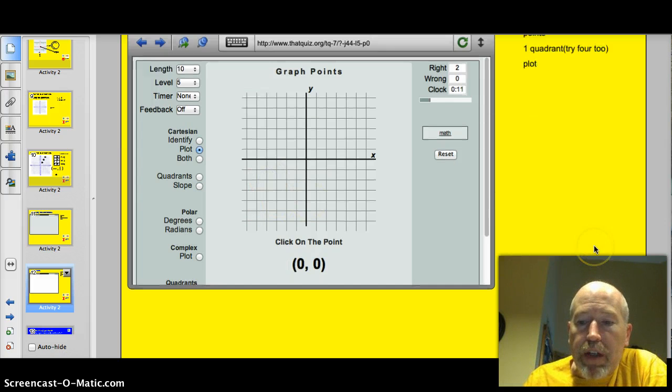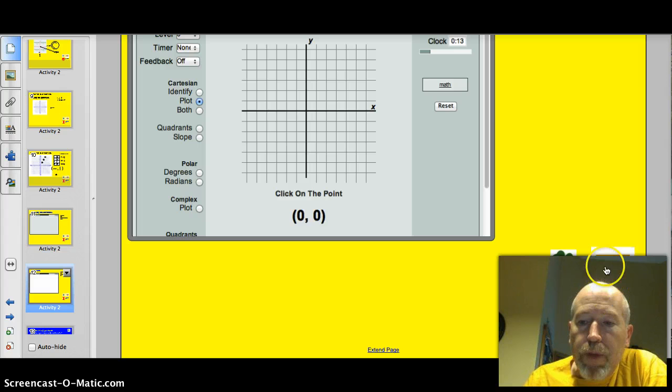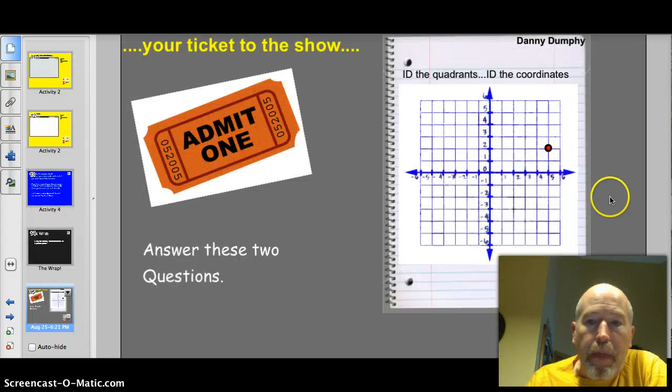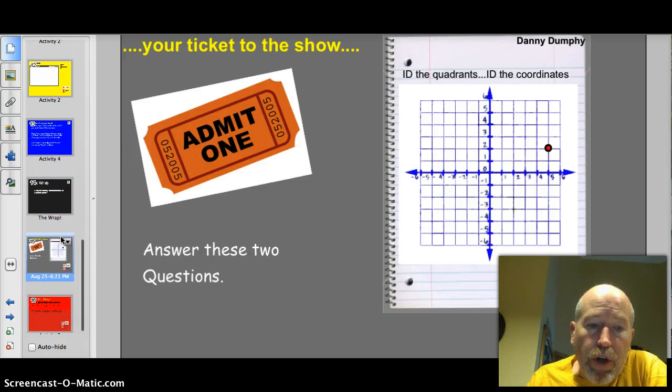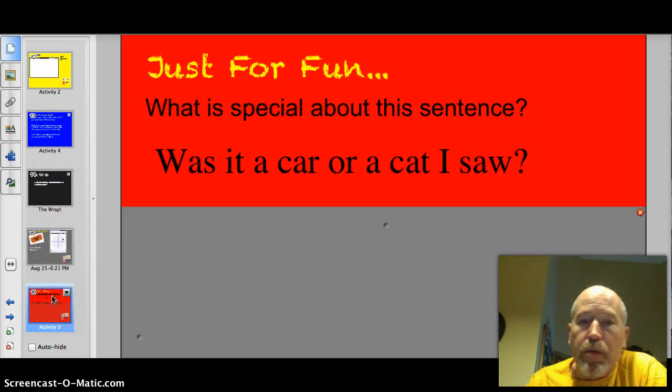Alright. Two questions. Identify the quadrants of this coordinate plane here, and then identify the coordinates of this point. So you'll come tomorrow with an x and y axes drawn. You'll have them numbered. Remember the clock, and then you'll also have the coordinates to that point on that. Great. Let's go to the ticket for the show, and I appreciate you being patient with me today.